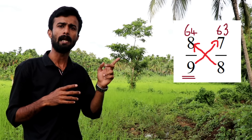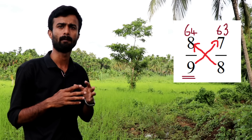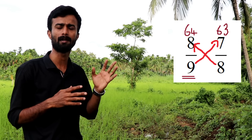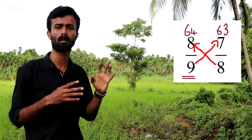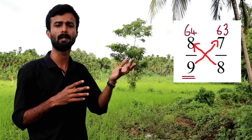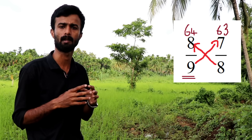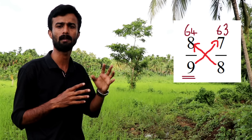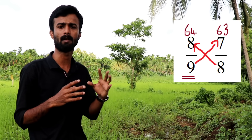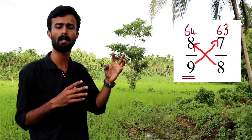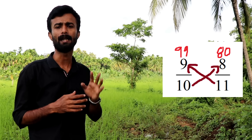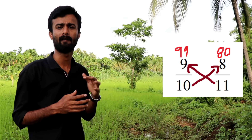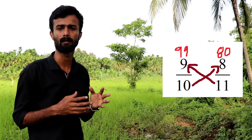Cross multiply the values: 8 multiplied by 8 gives 64, and 9 multiplied by 7 gives 63. Comparing 8/9 and 7/9, the values are not the same. The larger number wins. The method is very simple — cross multiply the same way. For example, 9/10 and 8/11: 9×11 = 99 and 8×10 = 80, so 9/10 gives 99.